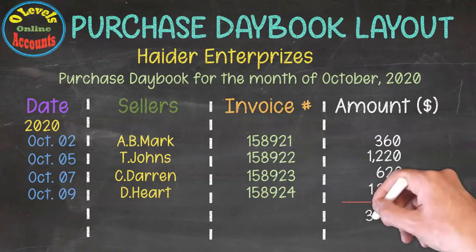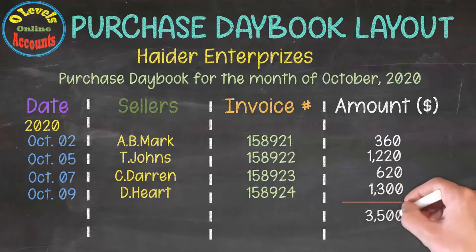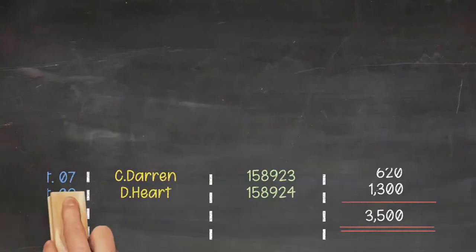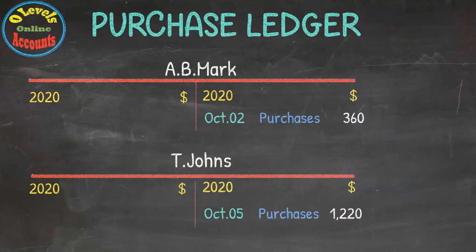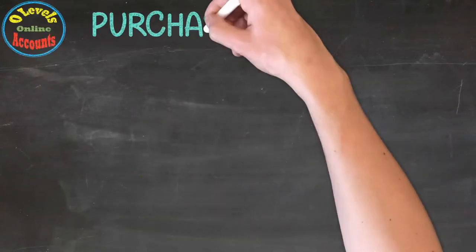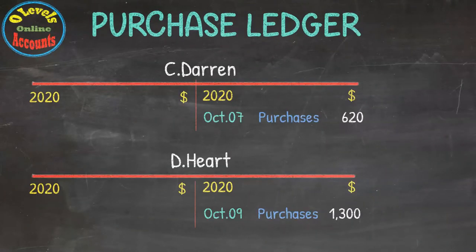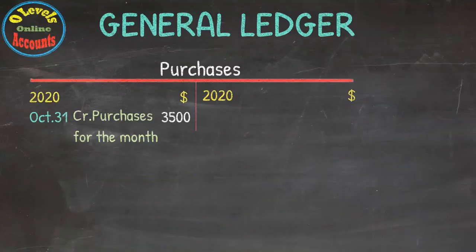After that, we get a total of 3500. Then we will make individual creditors' t-accounts, called the Purchase Ledger. Finally, we prepare all ledgers and put all related entries in them. After that, we will prepare a Purchase Account itself and put the total amount of purchases in it, i.e., 3500. This is called the General Ledger.